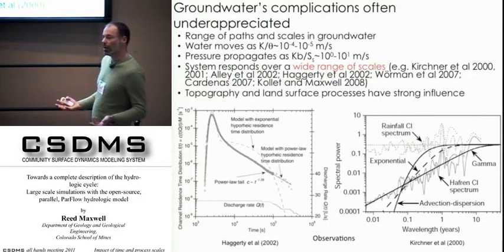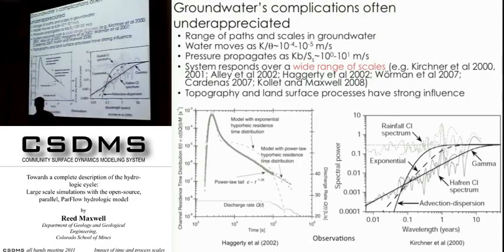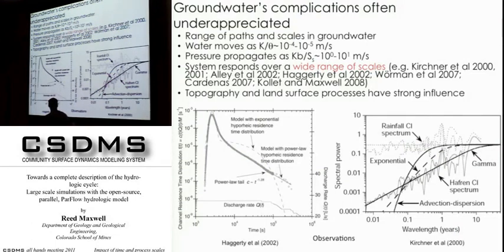When we think about models typically used to describe these systems, a lot of them miss fundamental types of behavior, particularly in scaling. This is a plot of spectral power versus wavelength. This is chloride data from Jim Kirchner's Nature article in 2000 — the rainfall chloride spectra has no coherent signal, but the outflow chloride spectra of the same watersheds shows a really clear fractal signature with a one-to-one relationship in log spectral power versus log wavelength. The advection-dispersion equation and exponential hyporheic zone models clearly don't capture the fundamental behavior.